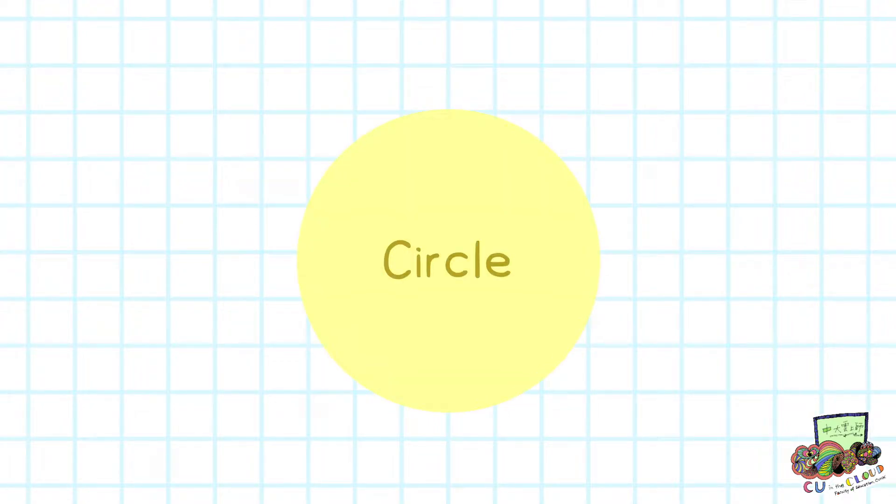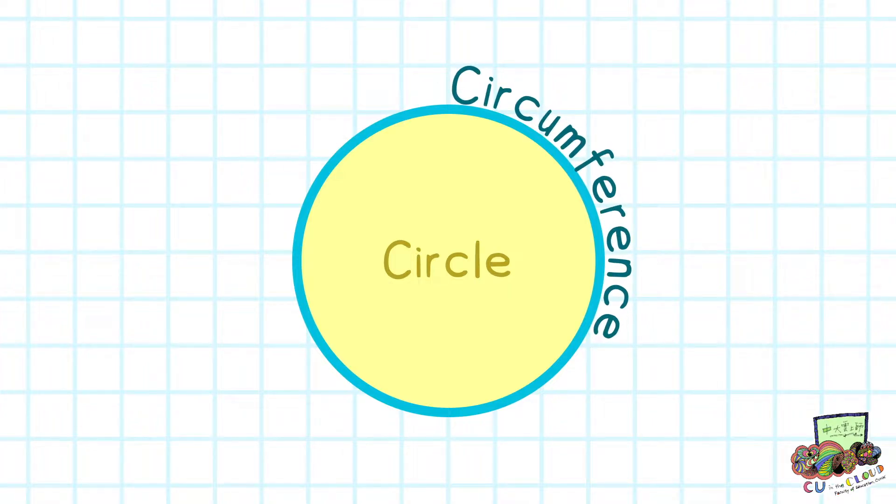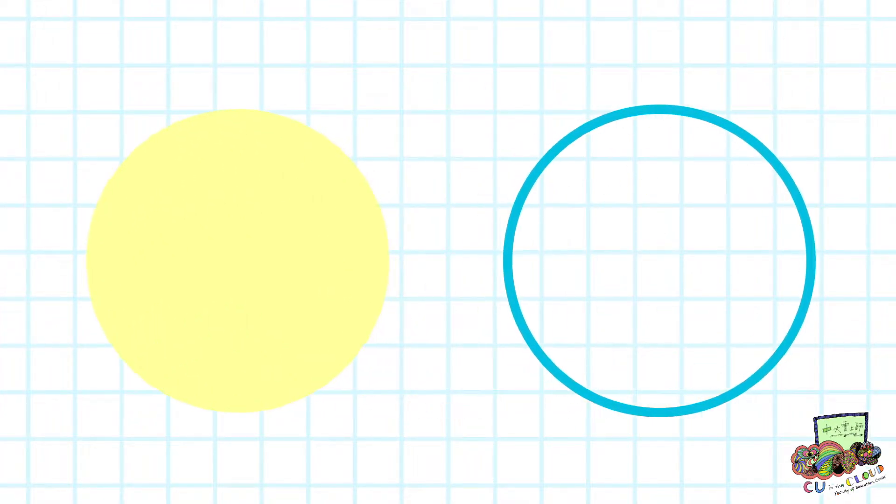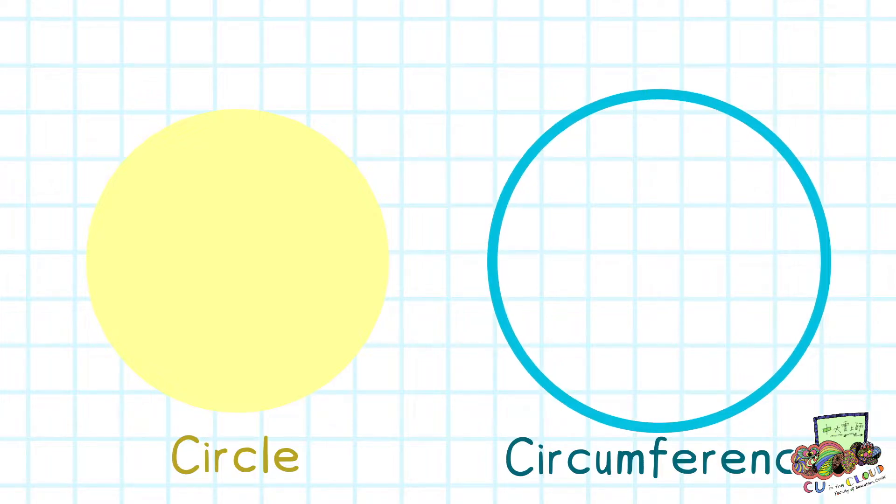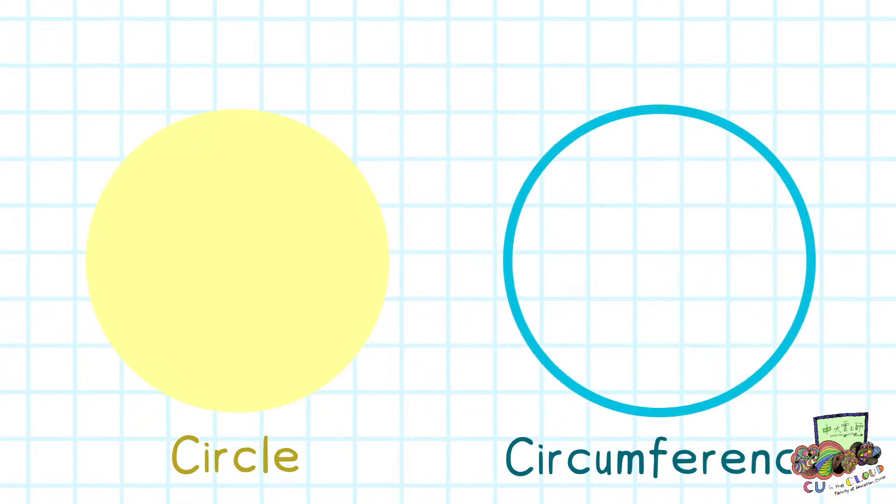This is a circle, and the curved line enclosing the circle is called circumference. The difference between circle and circumference is that circle is a plane figure, while circumference is a line around the circle.